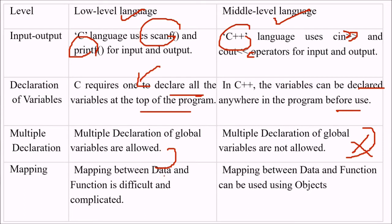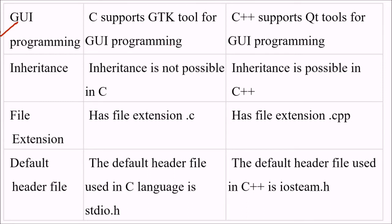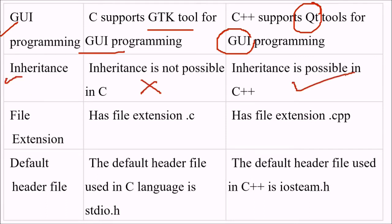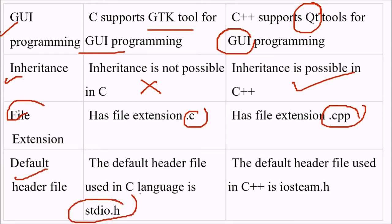In terms of mapping, mapping between data and functions is quite difficult and complicated in C, while in C++ data and functions are mapped very nicely using objects. C supports GTK tools and C++ supports Qt tools for GUI programming. Inheritance is not possible in C, while it is possible in C++. The file extension for C is .c, and for C++ it is .cpp. The default header file for C is stdio.h, and for C++ it is iostream.h.